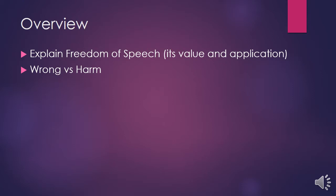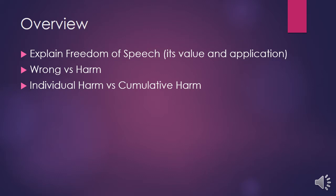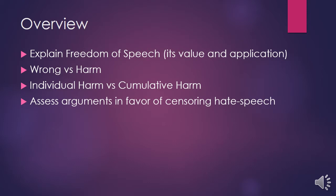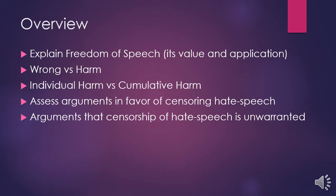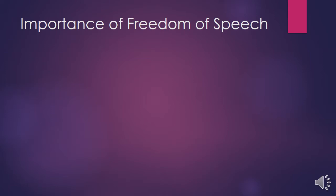Arthur gives a distinction between wronging someone and harming someone, as well as a distinction between two different kinds of harm: an individual harm and a cumulative harm. Arthur then assesses arguments in favor of censoring hate speech, but nevertheless gives an argument against censorship of hate speech, arguing that it is unwarranted. We're going to look at each of these five items.